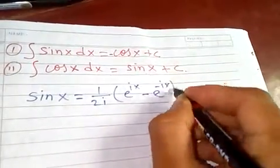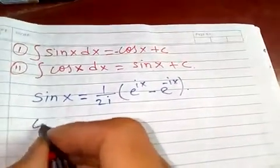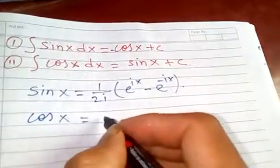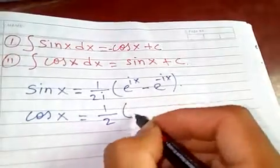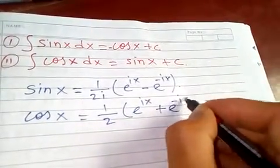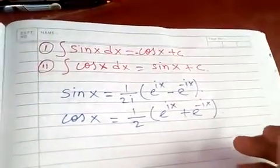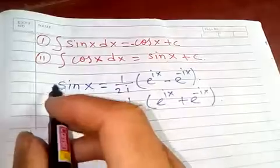And for cos(x), which is 1/2(e^(ix) + e^(-ix)). Now I'm going to integrate these.